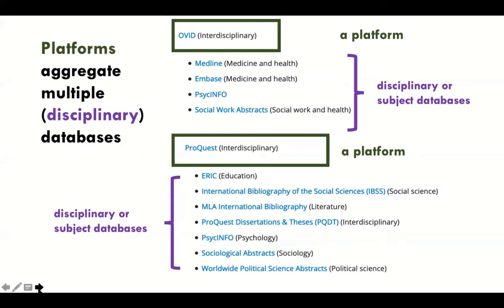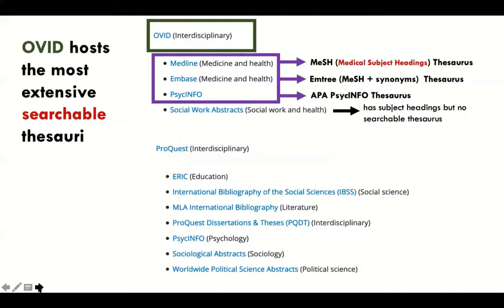Psychology is both on Ovid and on ProQuest. Under Ovid, we see databases with hugely significant subject-specific thesauri. We have MESH — Medical Subject Headings — the best-known and oldest thesaurus. Embase has M3 MESH with synonyms, a specialized thesaurus. And PsycInfo has a fantastic, beautifully revised APA PsycInfo thesaurus — they revised it this past summer and last year, so it's completely up to date and voluminous.